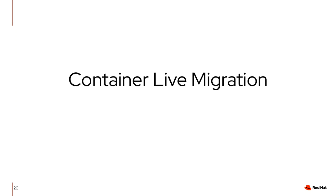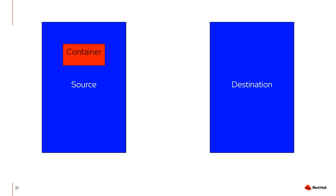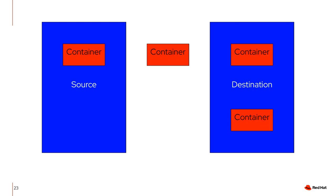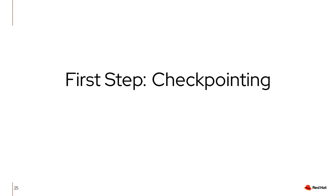The last use case I want to present is container live migration. I have a container running on a source system, I take it out by checkpointing it to disk, and then I can restore the checkpointed container on the destination system — achieving stateful container migration by moving the checkpoint archive to the destination system. I will show a demo of this later. Now let's get into some details about CRIU. The first step in the whole operation is to checkpoint a container.